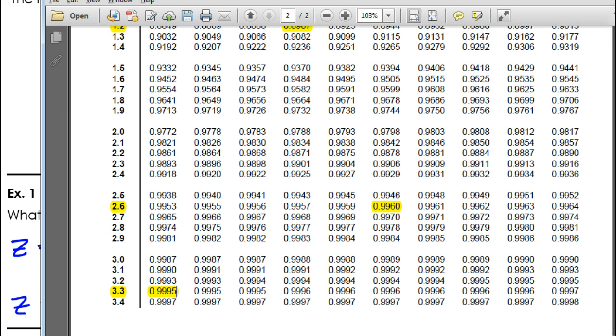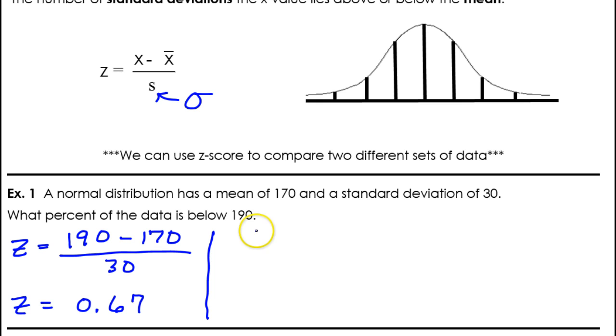Now, in order to use the chart to find the percentages that we want, first of all, let's use our proper notation. We want the percentage of data that is below 190, so less than 190. So, we're going to find the percentage of Z-scores that are below 0.67. And that should be the same thing. That should be the same percent.